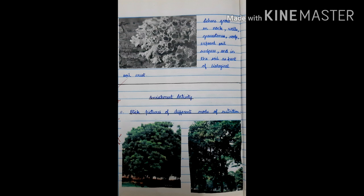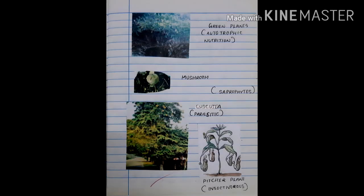Enrichment activity. Stick pictures of different mode of nutrition. These are the pictures of different mode of nutrition. Green plants are autotrophs. Mushrooms are saprophytes. Cuscuta is an example of parasite. Pitcher plants are insectivorous plants.